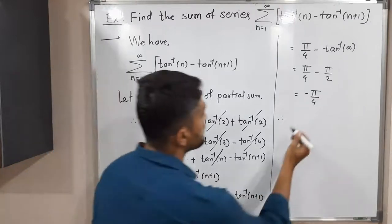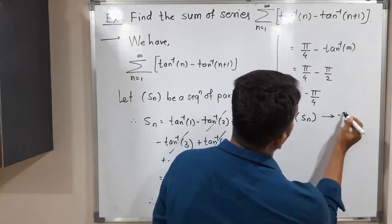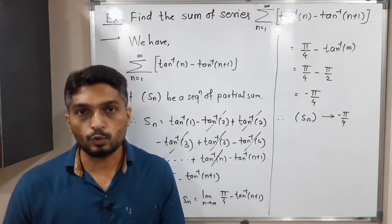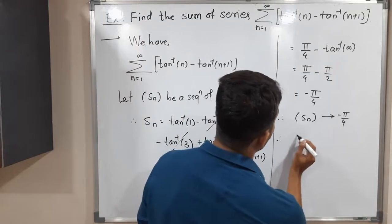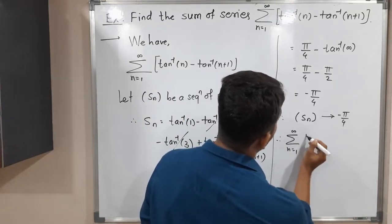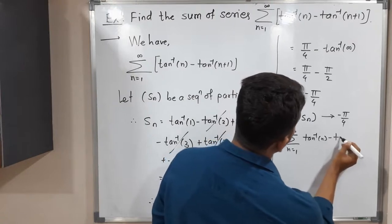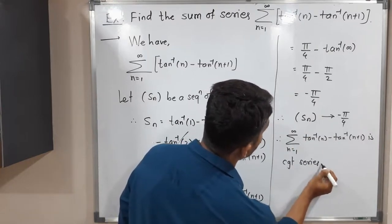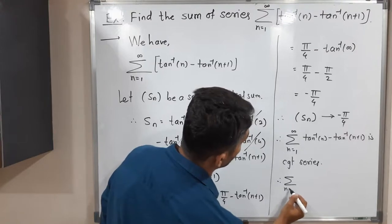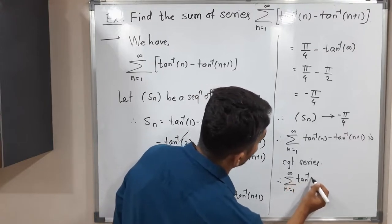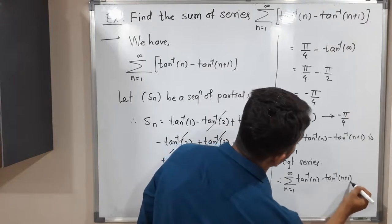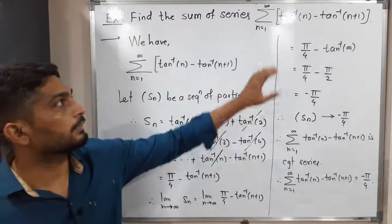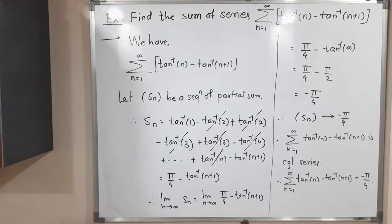That means the sequence of partial sums SN is convergent and converges to minus pi by 4. We know that if the sequence of partial sums is convergent, the corresponding series is also convergent and converges to the same point. Therefore, summation n running from 1 to infinity of tan inverse n minus tan inverse n plus 1 is a convergent series and converges to minus pi by 4. This is the required sum of this series. So make a screenshot of it.